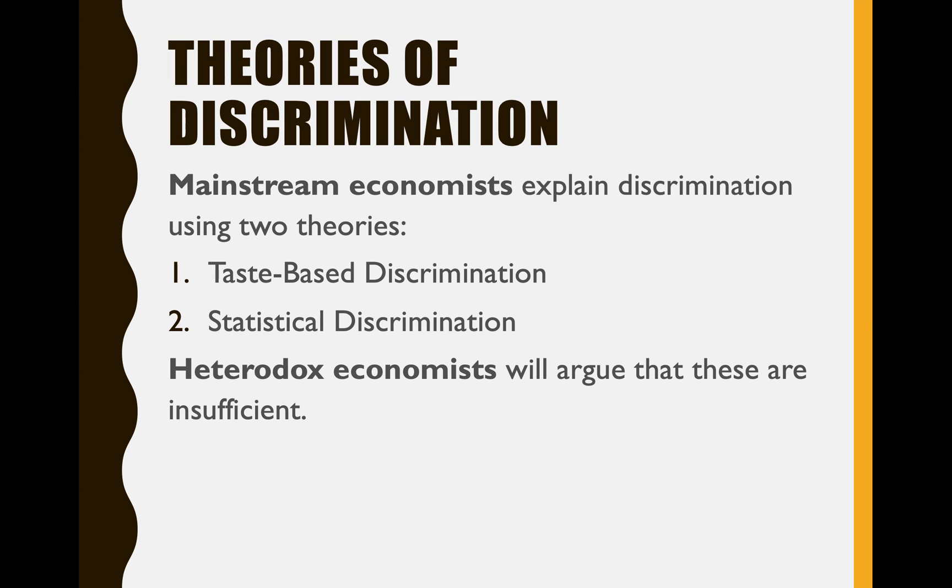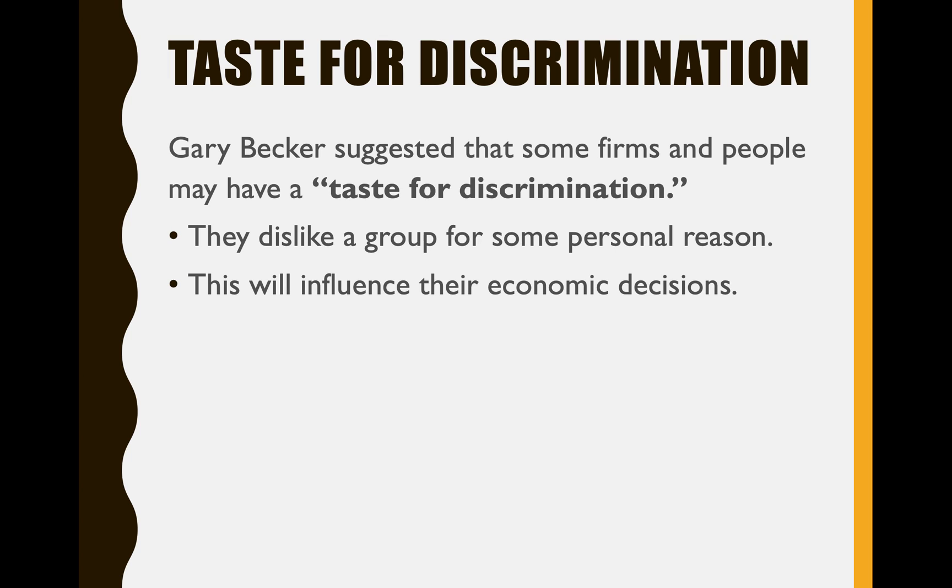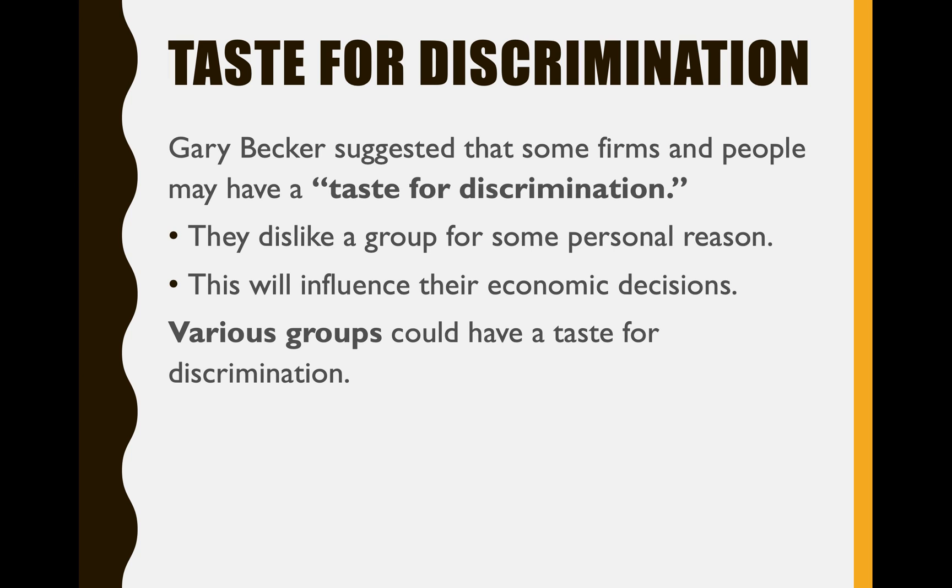We're going to first look at some mainstream economist theories of discrimination, and then go to some more heterodox and feminist theories of discrimination. Starting with the mainstream theories, let's look at taste-based discrimination and then statistical discrimination. Taste-based discrimination is something Gary Becker came up with. Becker said some firms just have a taste for discrimination — meaning they dislike a certain group of people for some personal reason — and this is going to influence their economic decisions.